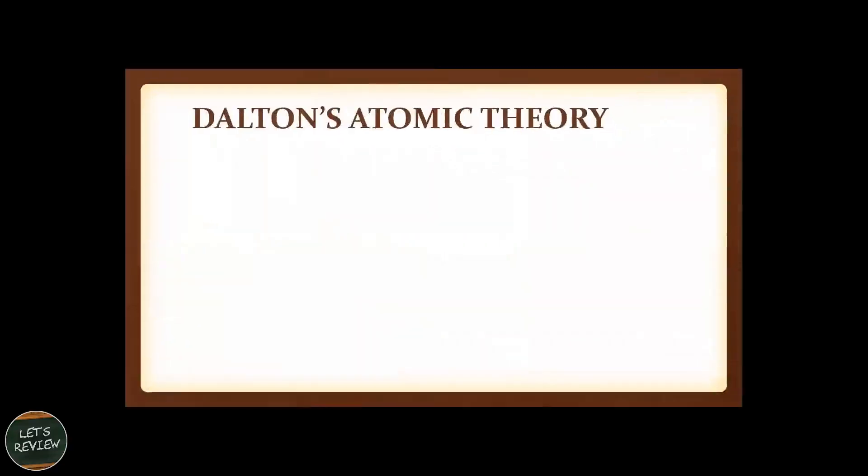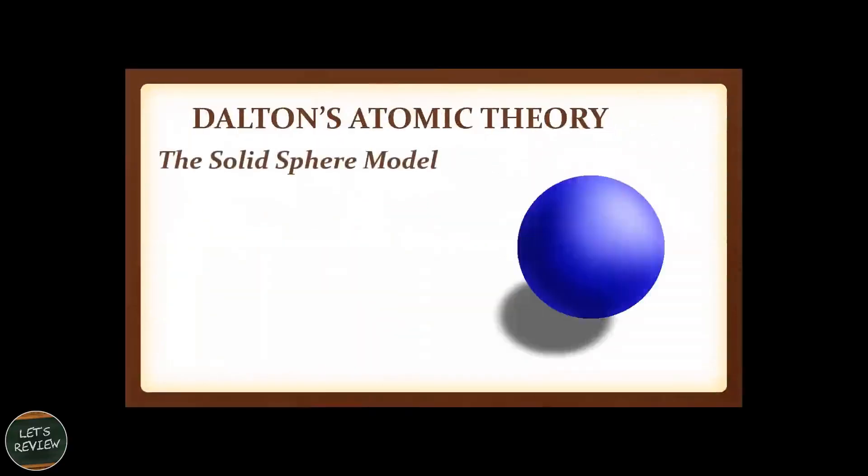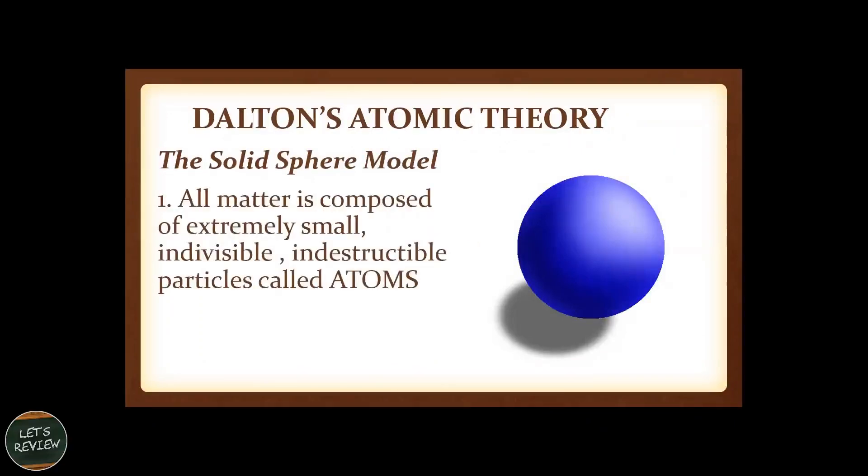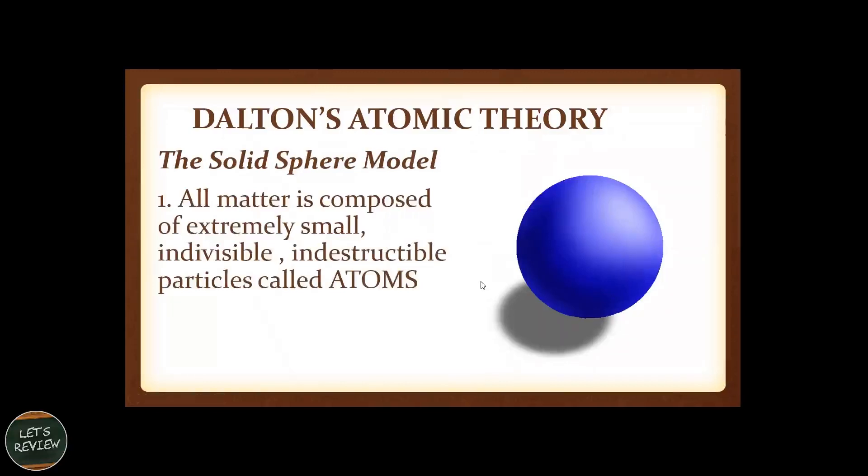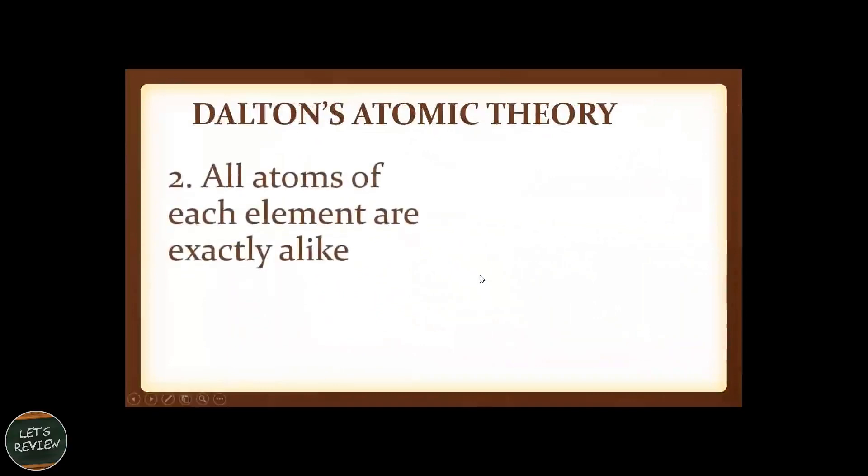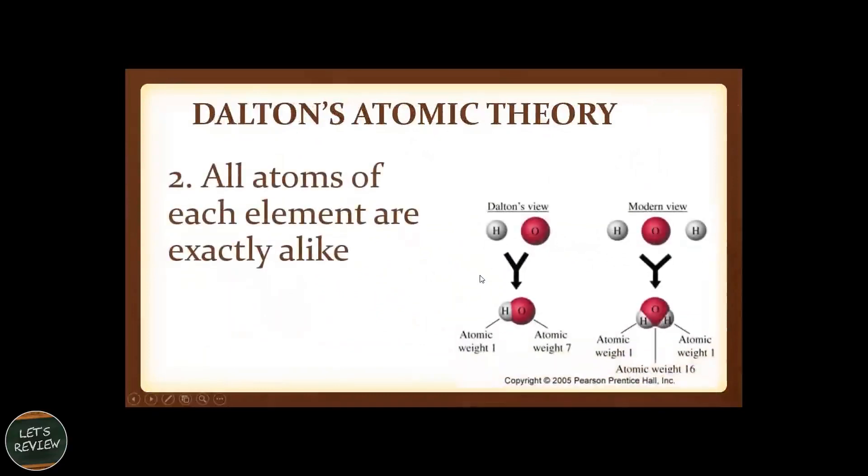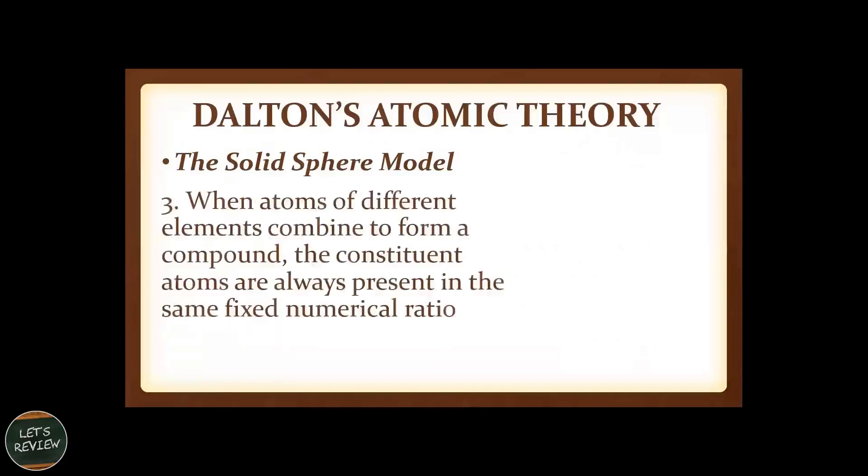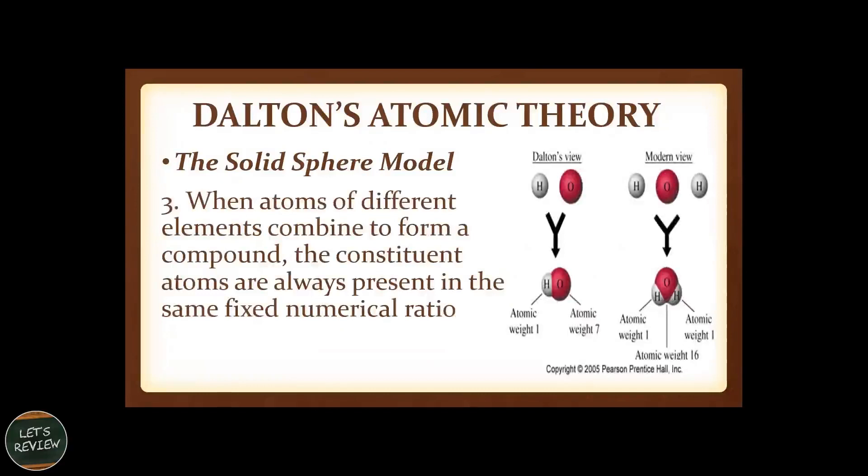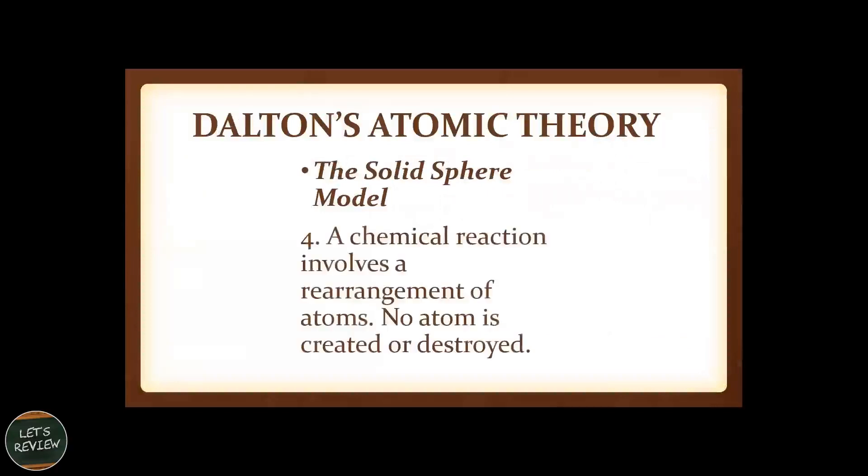How did the atom come together? In Dalton's atomic theory, he called it the solid sphere model. He said that all matter is composed of extremely small, indivisible, indestructible particles, and he called them atoms. All atoms of each element are exactly alike. When atoms of different elements combine to form a compound, the constituent atoms are always present in the same fixed numerical ratio. And a chemical reaction involves a rearrangement of atoms. No atom is created or destroyed.